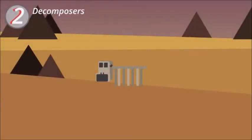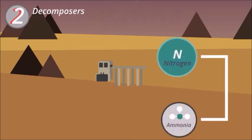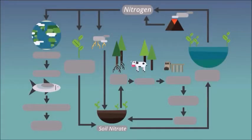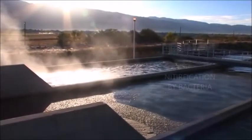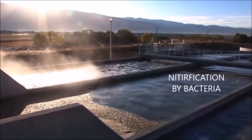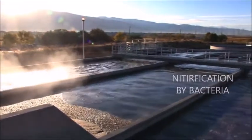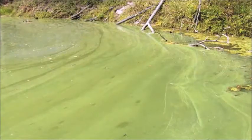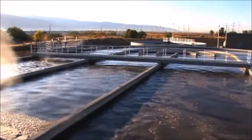Decomposers are also part of the biological nitrogen fixation since they turn dead organic matter into ammonia and nitrates as well. Plants do, however, compete with aerobic bacteria for ammonia. Nitrification by bacteria produces nitrate by oxidizing ammonia. The nitrate can then either be taken up by the plants, be carried away by stream or groundwaters, or be denitrified by anaerobic bacteria.